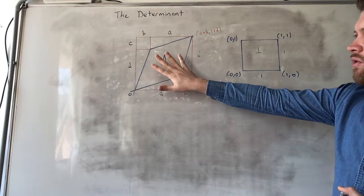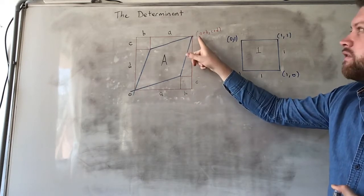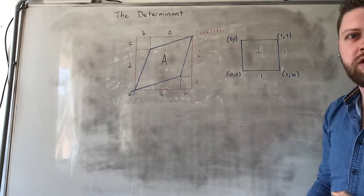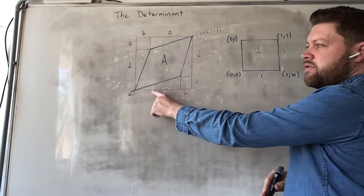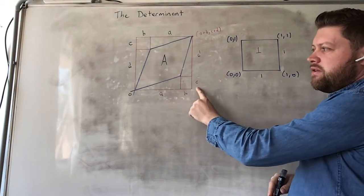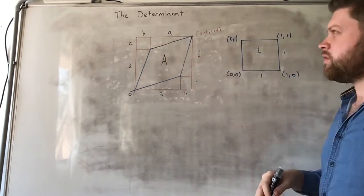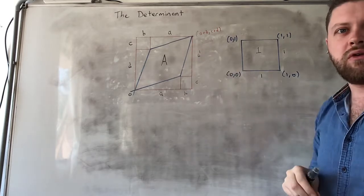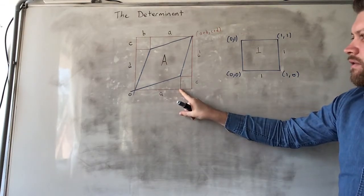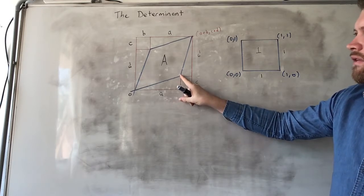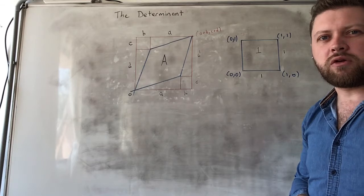Turning now to the new transformed parallelogram, this point is at (a+b, c+d) from the previous video. We can build a rectangle from this parallelogram, making use of its symmetries. This point is a along the x-axis and c up the y-axis, giving the point (a, c). This other point is b along the x and d along the y, which is why we're able to draw the diagram as it is.